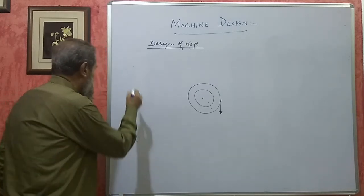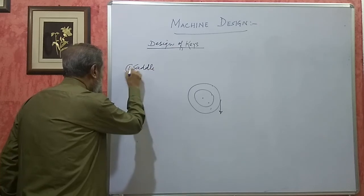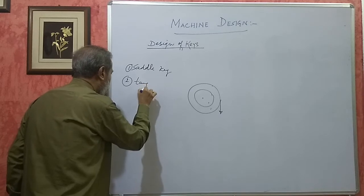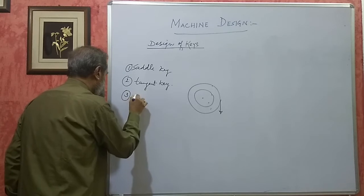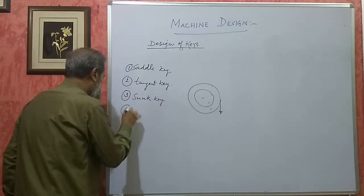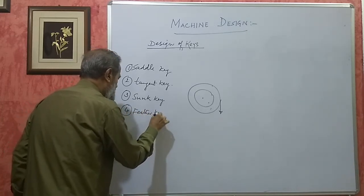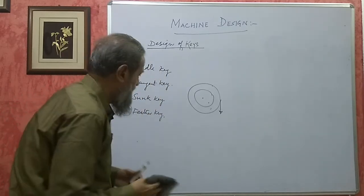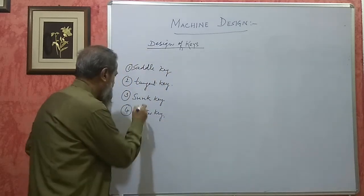In keys, we get different types: saddle key, tangent key, sunk key, feather key, etc. The key we will focus on designing is the sunk key.